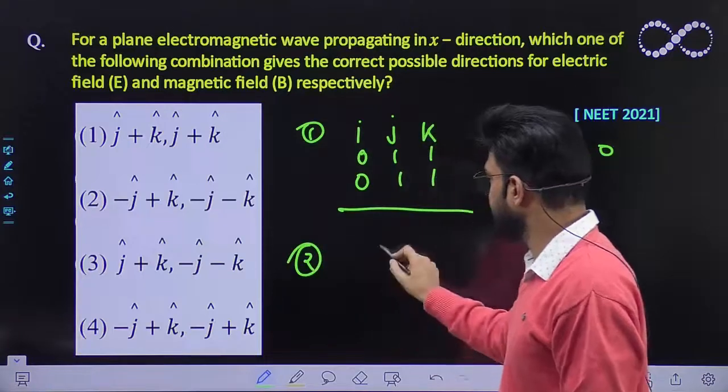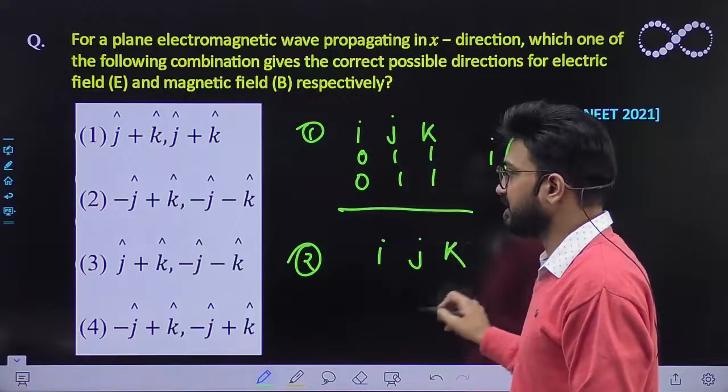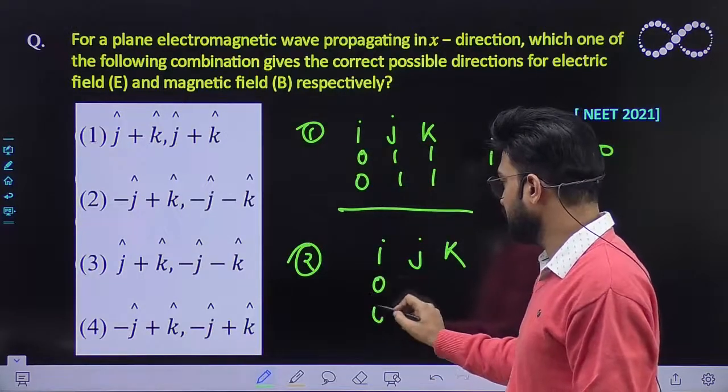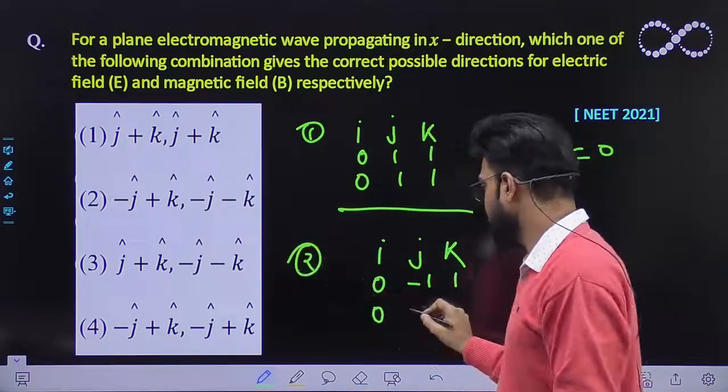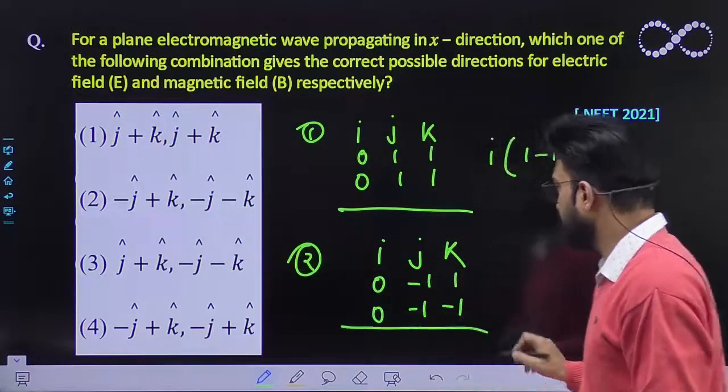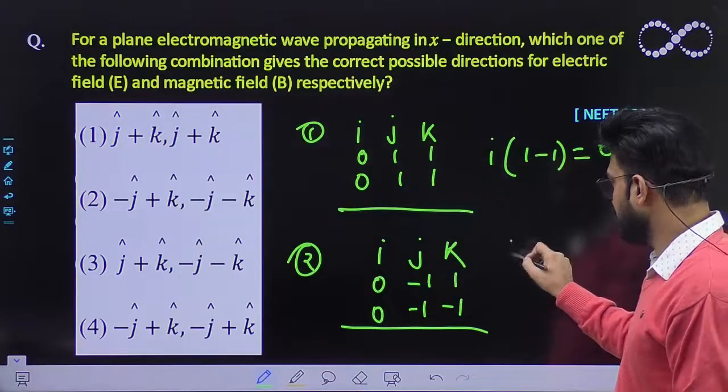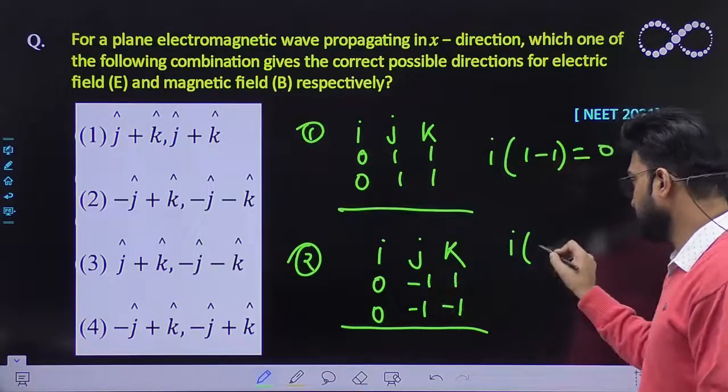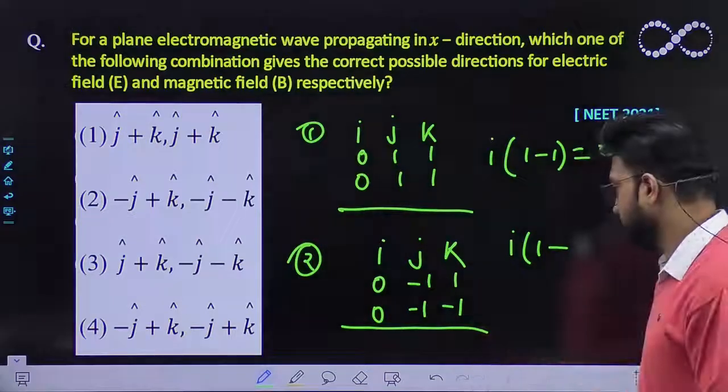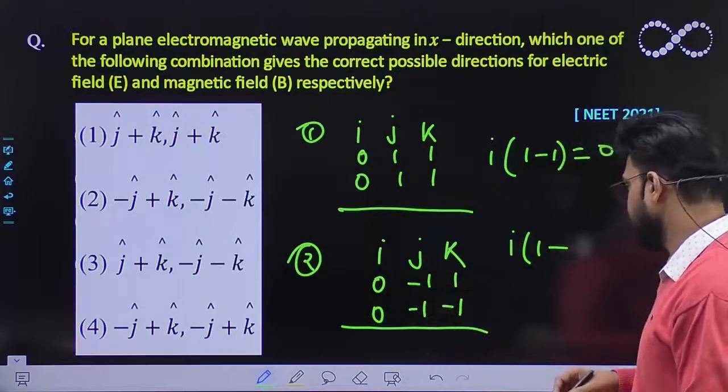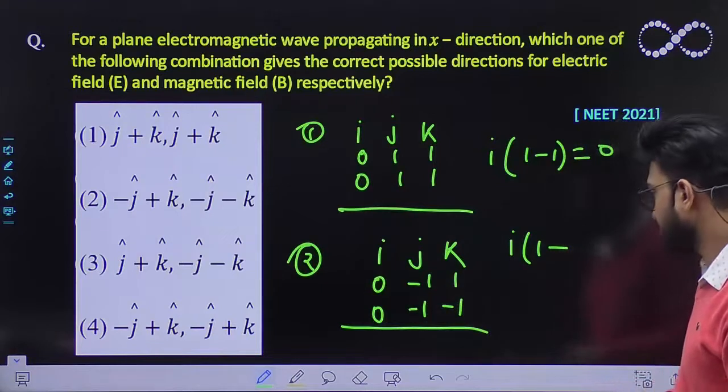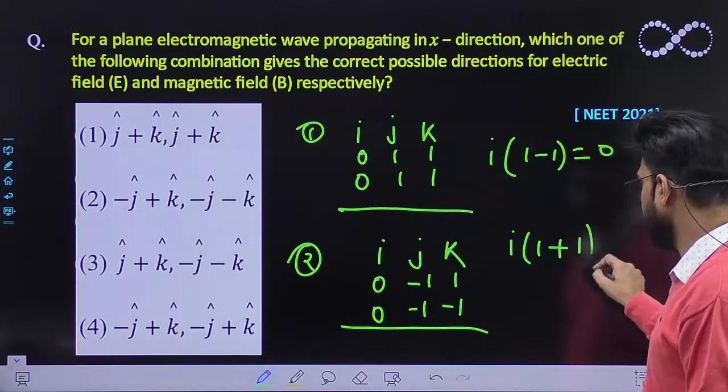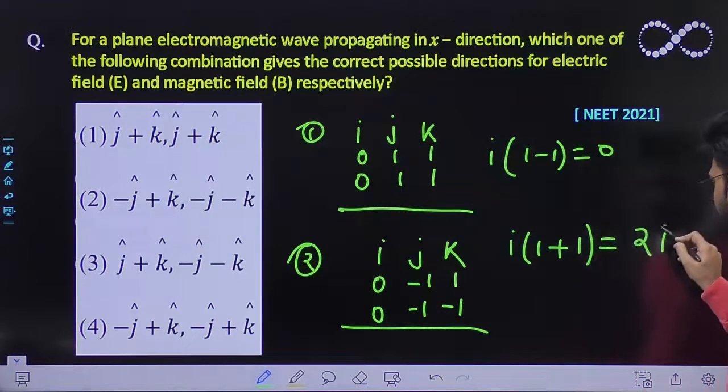What about the second option? i j k, here 0, minus 1 plus 1, minus 1 minus 1. So it would be i(minus minus plus 1 minus minus). It should be negative negative plus 1. So you are getting 2 i-cap.